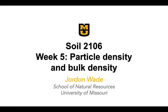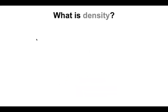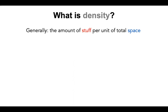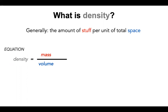Hello everybody. This week we are talking about particle density and bulk density. We should probably start with figuring out what density is. Generally speaking, density is just the amount of stuff per unit of total space. If we wanted to put that into an equation form, density is mass divided by volume.